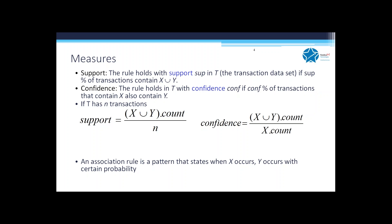With millions of records, it's very difficult to find 90% of transactions supporting both X and Y. For example, in retail transactions, if you talk about milk, bread, and cereal, they might represent around 10% of transactions. Given a diversified buying pattern, you get a very small set of overlapping transactions, so it's not fair to expect support to be very high. A 10% support for bread, cereal, and milk together is reasonable.